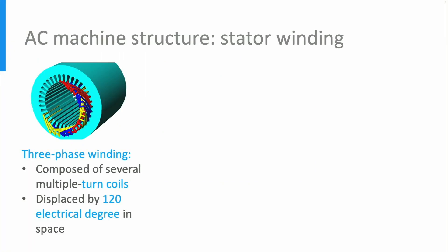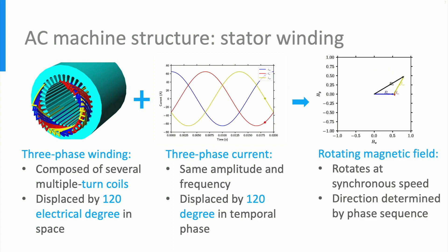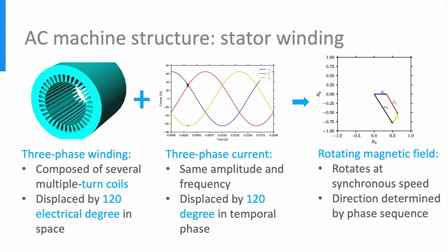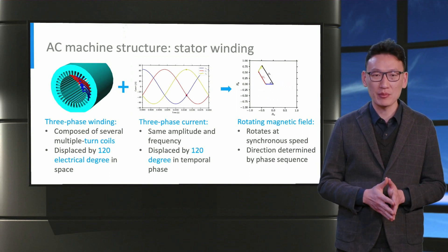Let's take a special look at the three-phase stator winding. The three-phase winding consists of multiple coils embedded in the stator slots and interconnected to form three phases displaced by 120 electrical degrees in space. The three-phase currents have the same amplitude and frequency and are displaced by 120 degrees in temporal phase. When the balanced three-phase winding is fed by balanced three-phase current, a rotating magnetic field is produced in the air gap. The rotating speed is the synchronous speed, and the direction of rotation is determined by the three-phase sequence, as seen in the animations.